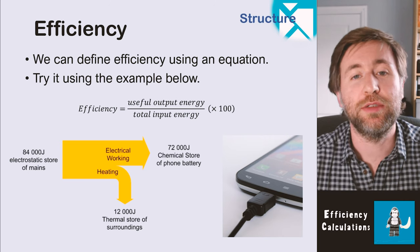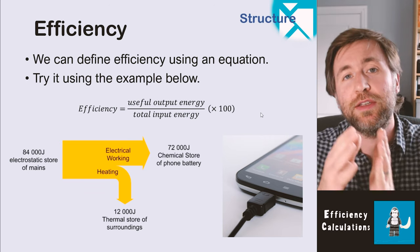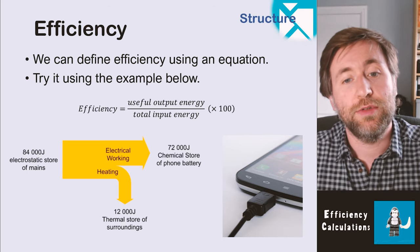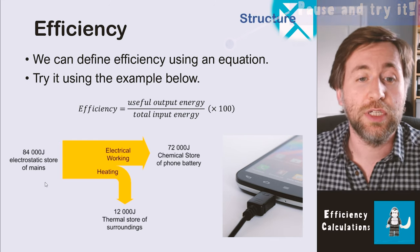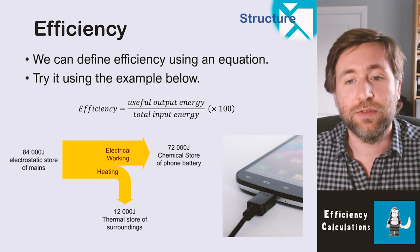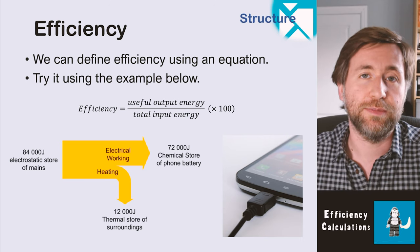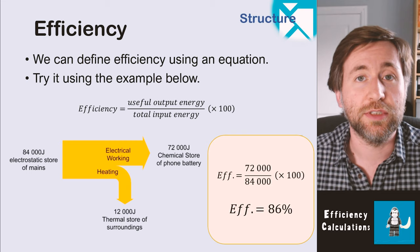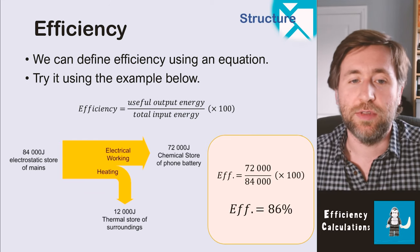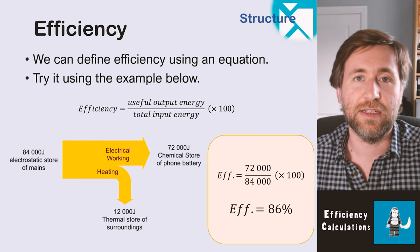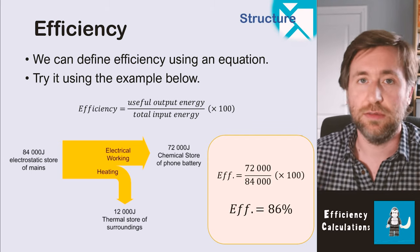Efficiency equals useful output energy divided by total input energy. For example, charging a phone: 84,000 joules in the electrostatic store of the mains, 72,000 joules transferred into the chemical store of the battery, and 12,000 joules wasted through heating to the thermal store of the surroundings. The useful is the chemical store of the battery. So 72,000 ÷ 84,000 × 100 = 86%. You can express efficiency as either a decimal (0.86) or a percentage (86%).